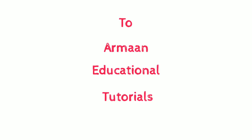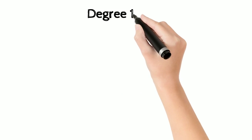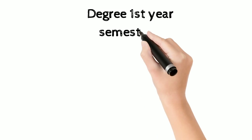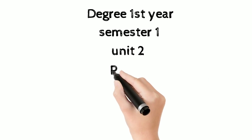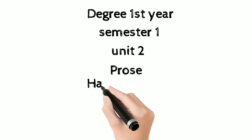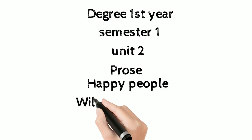In this class, today I am going to explain to you about Degree First Year, Semester 1, Unit 2 — Prose. Under prose, our theme is 'Happy People' written by William Ralph Inge.